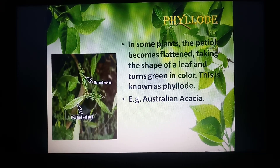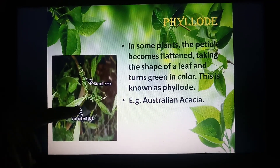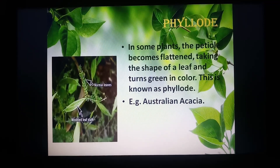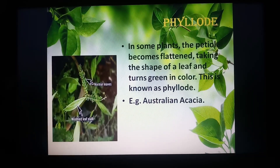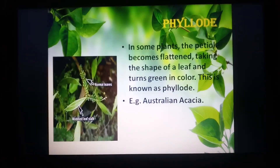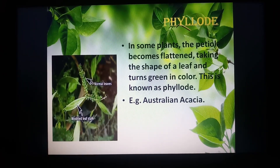Phyllode is a modification of leaf where the petiole of the compound leaf is flattened and green in color. If you look at the picture, you can see the petiole is flattened and green. It is expanded, unlike a normal petiole which is simply a thin cylindrical stalk. It helps in photosynthesis and is usually seen when the leaves easily wither away. Once the leaf falls, the petiole performs photosynthesis and provides food to the plant. Example is Australian acacia.